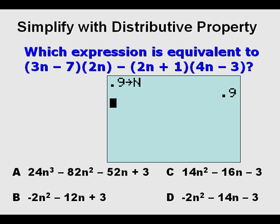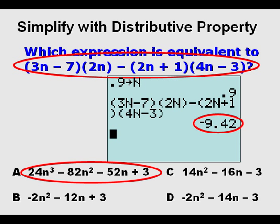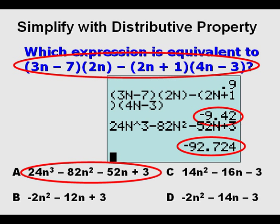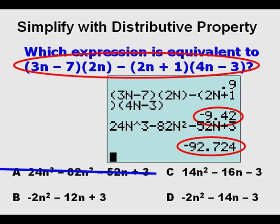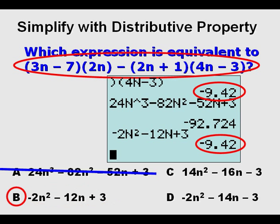What we need to do is store a value for n. In this case I store 0.9. And we type in this expression here and get as a value negative 9.42. So now we need to use our multiple choices here and check them for expression equivalency. We enter for a and we get negative 92.724, which is not negative 9.42. So we cross that out as incorrect. And we enter choice B, and we find we also get negative 9.42, which is our check for expression equivalency. And we know that that's right.